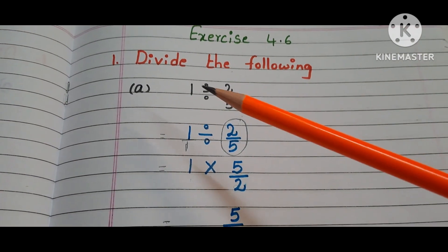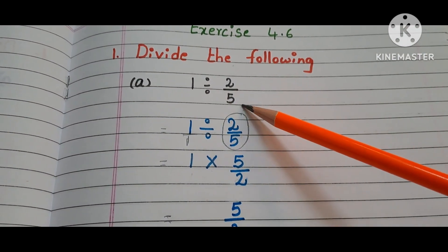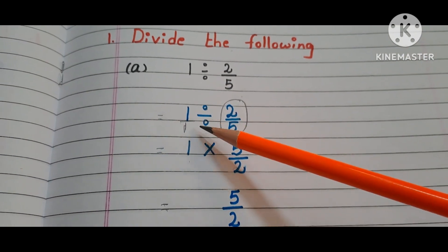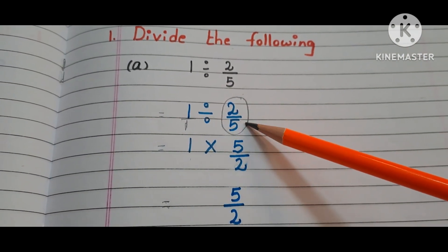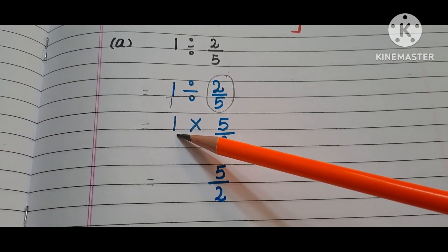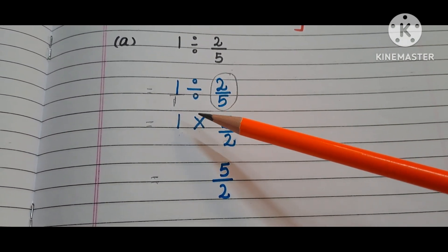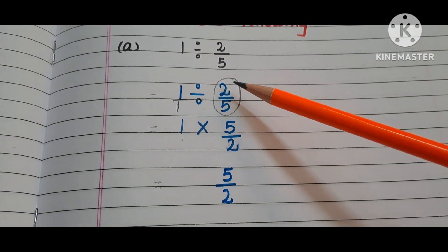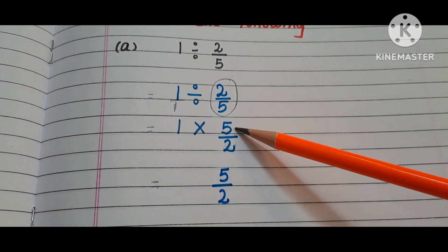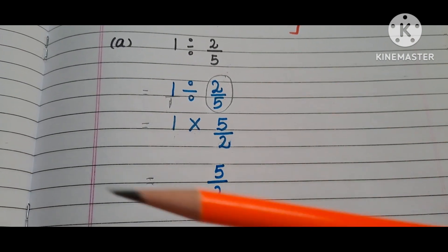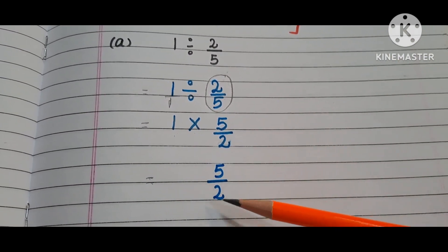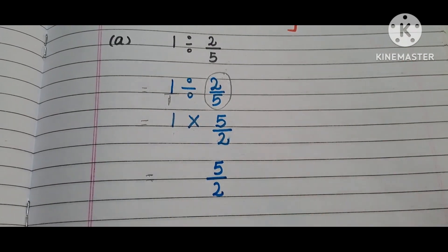The question is 1 divided by 2/5. Here, 1 is nothing but 1/1 divided by 2/5. First step: copy down the first fraction, that is 1. Instead of the division symbol, write the multiplication symbol and write the reciprocal of 2/5. Reciprocal of 2/5 is 5/2. So 1 times 5/2 is 5/2. The answer is 5/2.